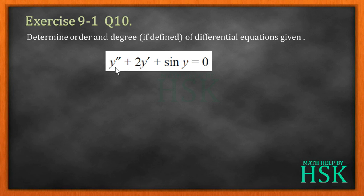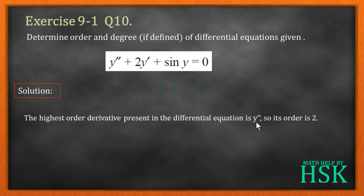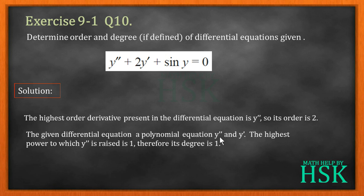In question number 10 we have been given the differential equation y'' + 2y' + sin y = 0. The highest order derivative present is y'', that is the second order derivative of y with respect to x, so its order is 2. The sin y does not affect the degree condition, because it is not necessary that the equation be polynomial in y — the equation only needs to be polynomial in its derivatives. As the equation is polynomial in y'' and y', the highest power to which y'' is raised is 1, therefore its degree is 1.